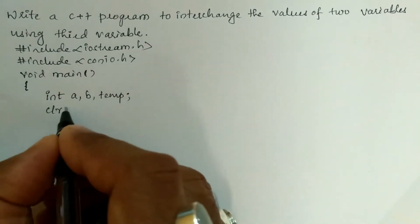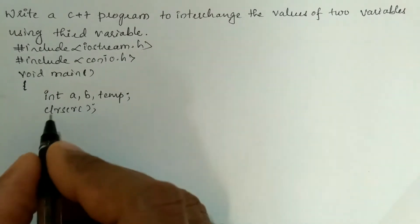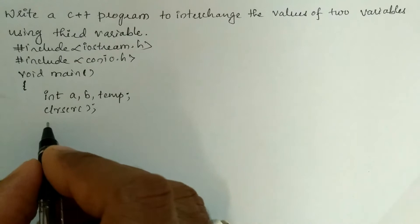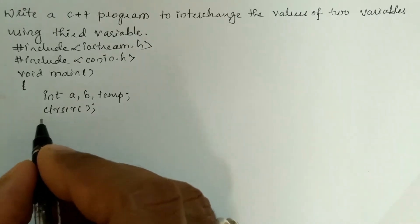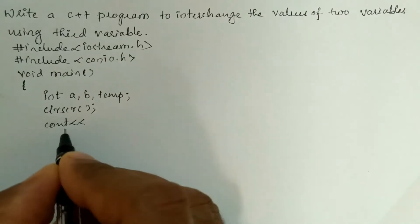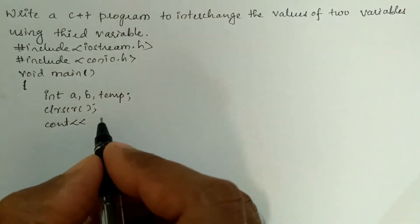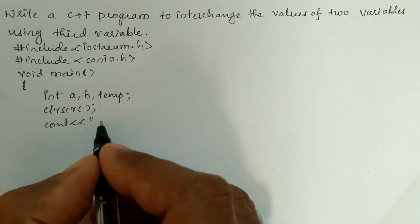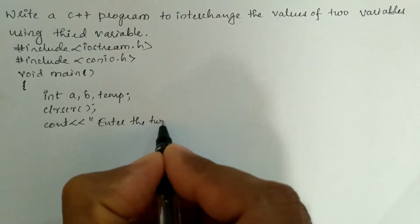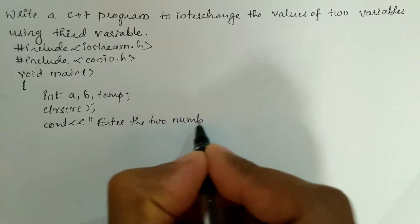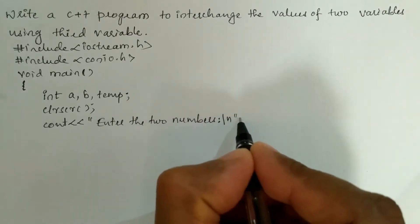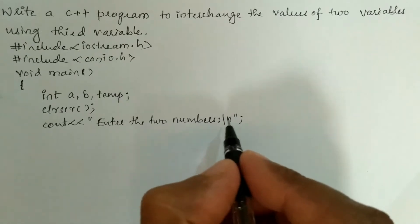Now we are going to write the clrscr() function, which is used to clear the screen. After this, we are going to ask the user to enter two numbers using a cout statement — stream insertion operator and in double quotation marks we write "enter the two numbers".